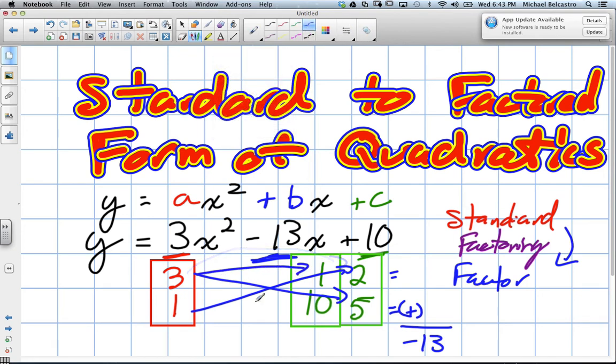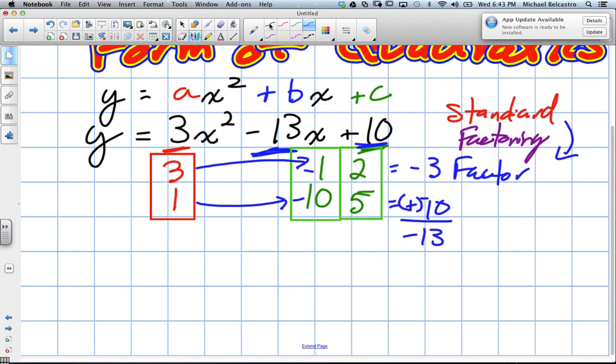So I'm just going to draw some permanent lines to help us remember. This would be 3 and 10. And in order for this to work, they both have to be negative. What is negative 1 times negative 10? Yeah, so that works in terms of our factors.